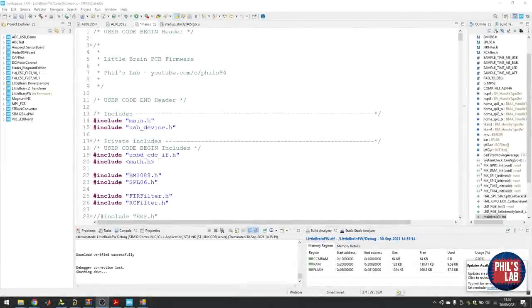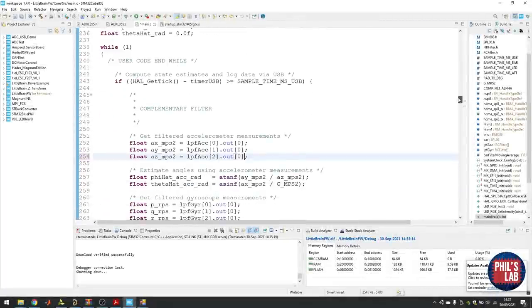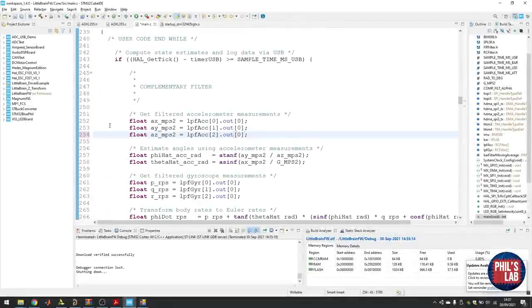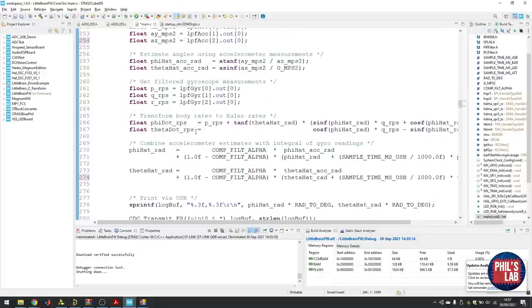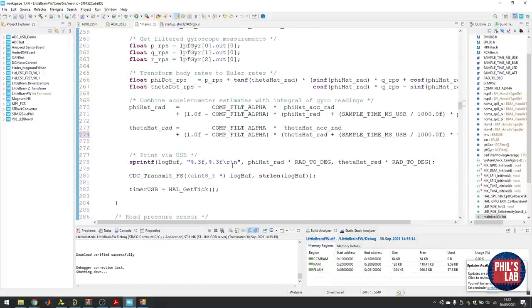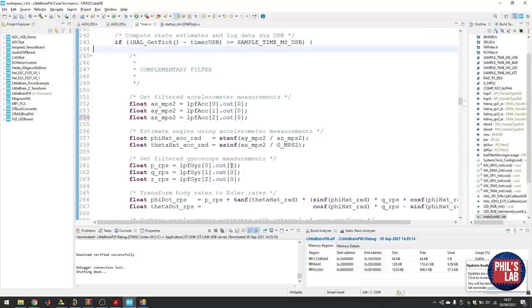Here we are on STM32 Cube IDE. I'd suggest you watch the previous videos on how I set up this board. I've defined my complementary filter up here, and for now I've set it to 0.05. Down here, the main code for the complementary filter is in my while loop, which runs continuously. Essentially, I run at my fixed sample time, about 10 milliseconds. In that, I can compute my complementary filter as well as print my results, my angle estimates, via USB as a virtual COM port.